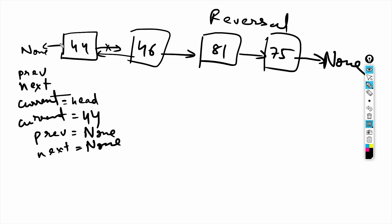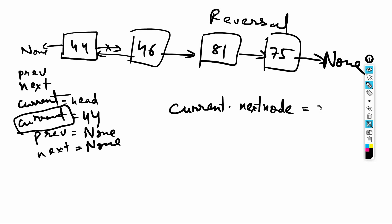The objective right now is to make 44 point to None. None here is the previous node of 44. To make 44 point to None, we do: current.next_node = previous. Right now the value of previous is None, so that works — 44 will point to None.